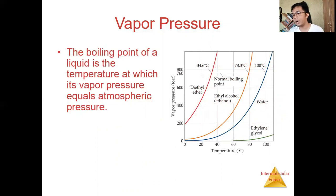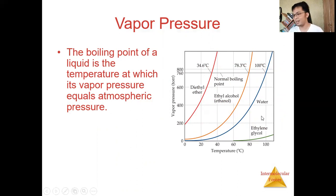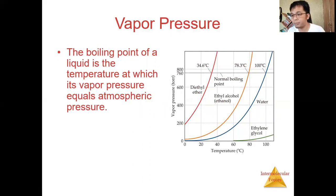Since we are talking about vapor pressure, it is also related to the boiling point of the liquid. You all know that — when you boil water and it starts steaming, you say the water has reached its boiling point. So by definition, the boiling point of a liquid is the temperature at which the vapor pressure is equal to the atmospheric pressure.